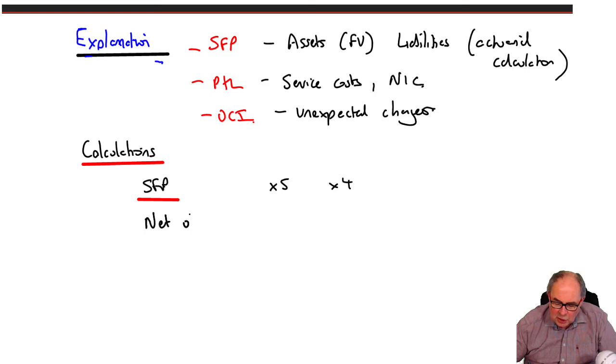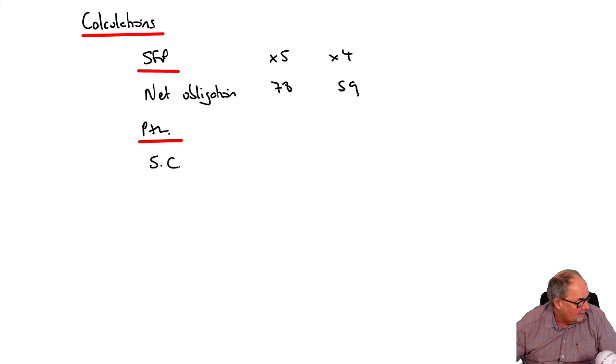Which I'm copying from the scenario - $78 and $59. In the profit and loss, you've got the service cost. And you've got a current and a past service cost, that's dealt with identically. I tend to put them in brackets, but you don't have to. So I think that was $18 and $9.